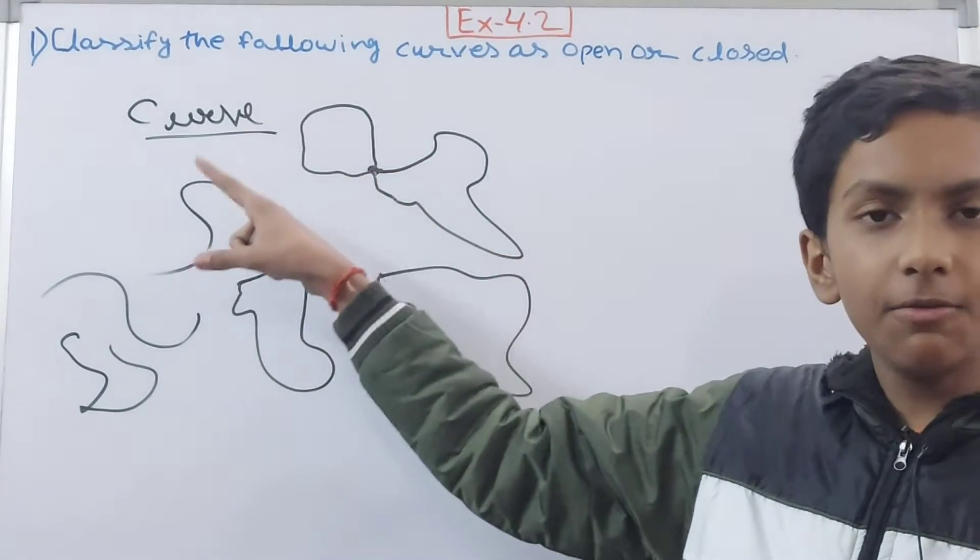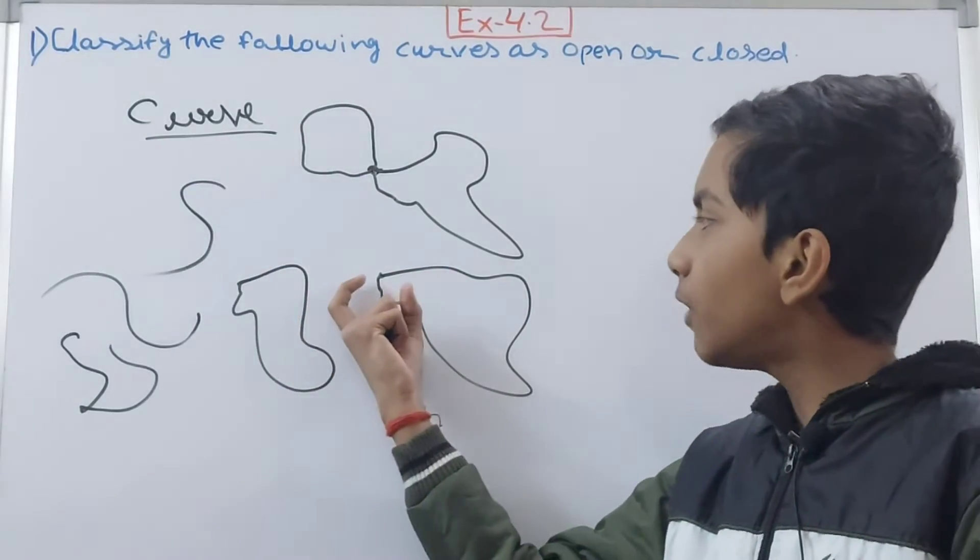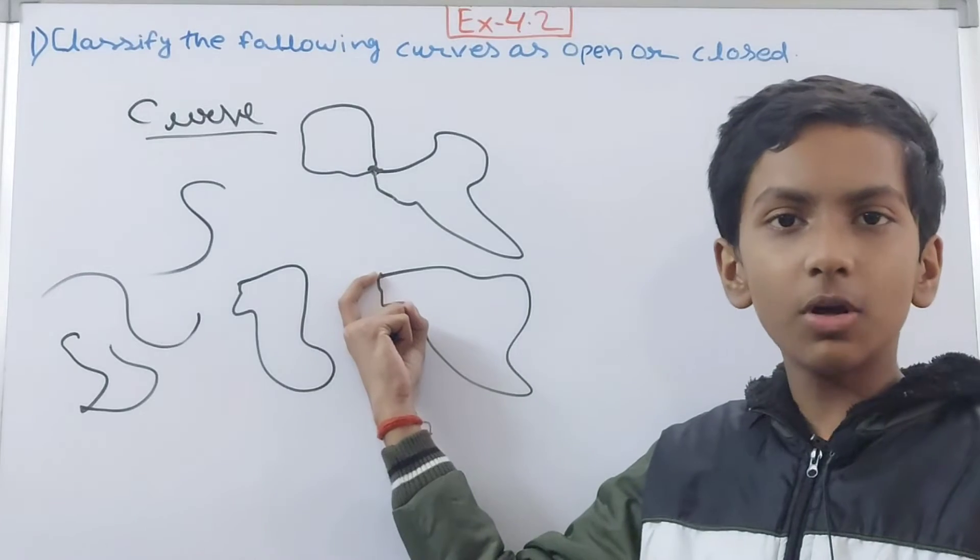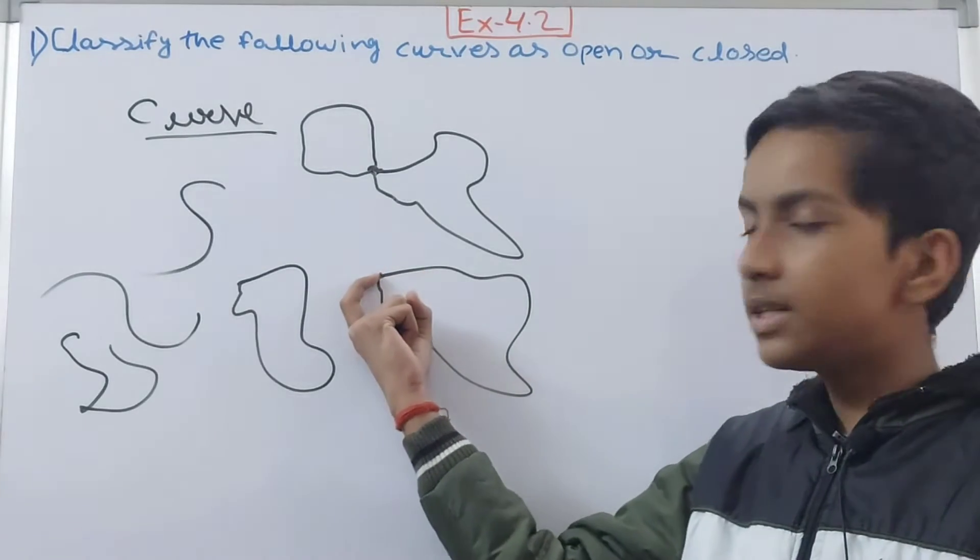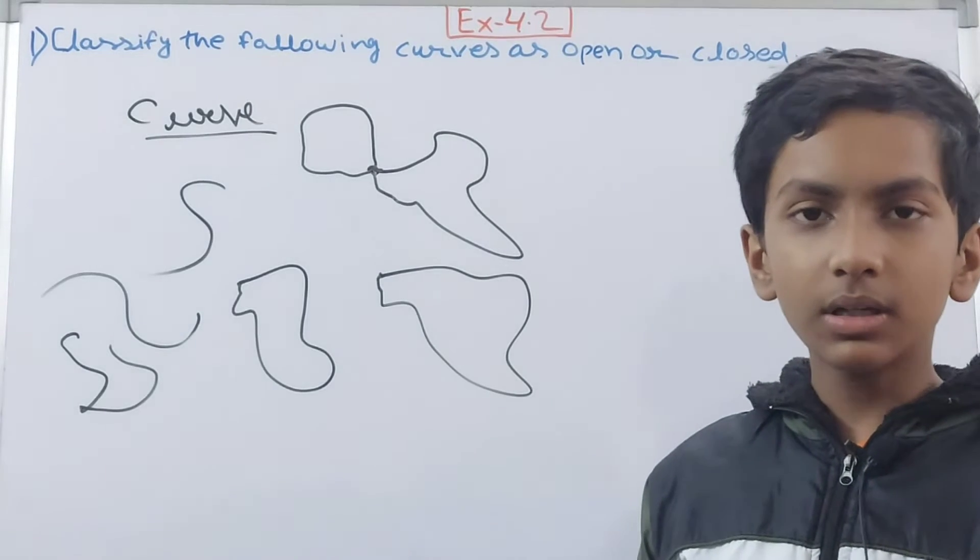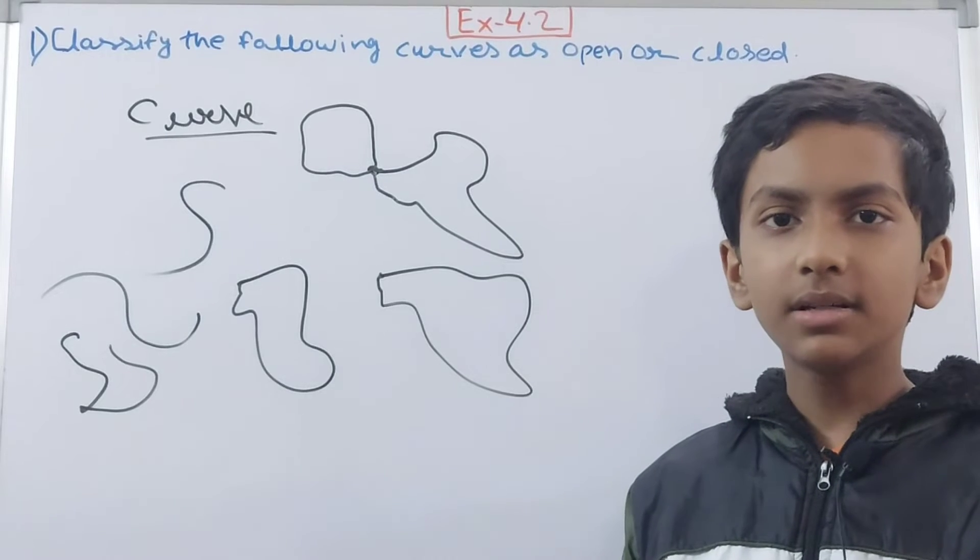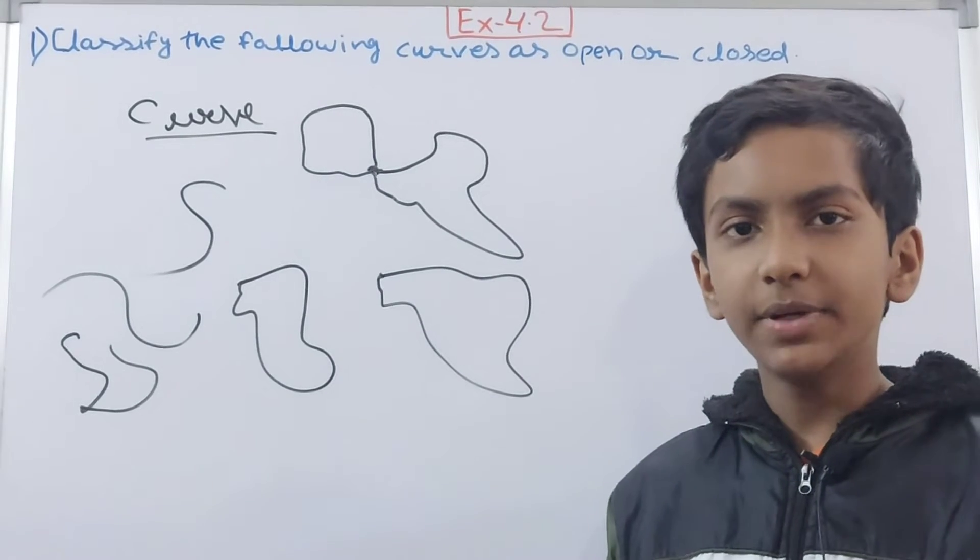So it is crossing the initial point. But here, what happens is that our end point is not crossing the initial point. So a curve in which the curve is not passing the initial point—that curve is known as a simple curve.